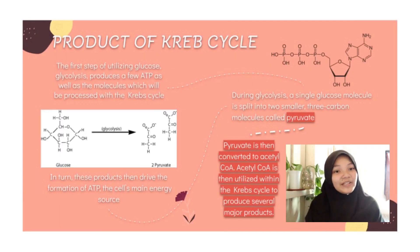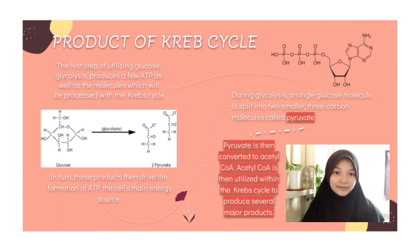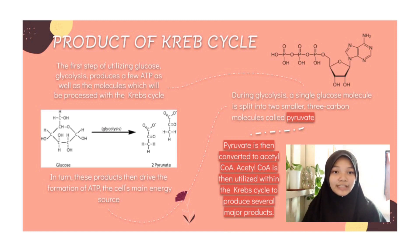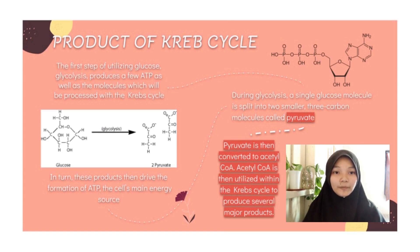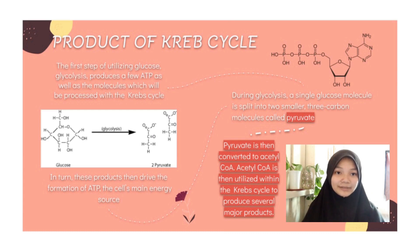Now let's look at the products of the Krebs cycle. The first step of glucose metabolism, glycolysis, produces a few ATP as well as molecules which will be further processed by the Krebs cycle.